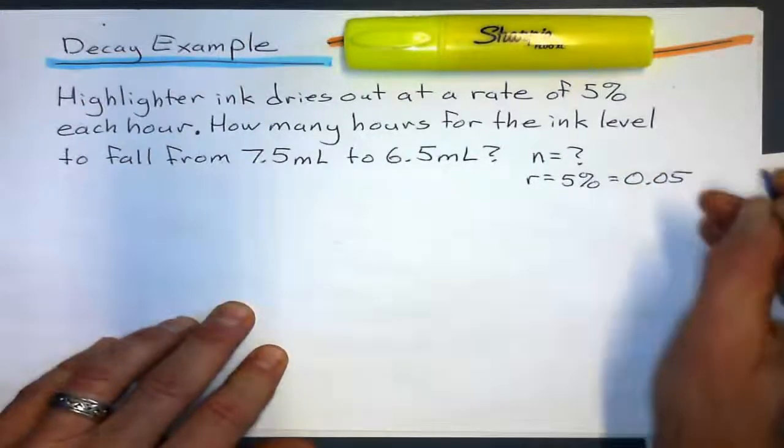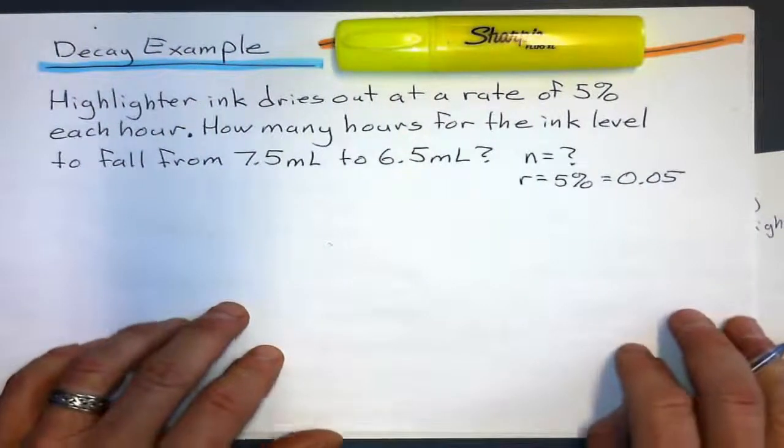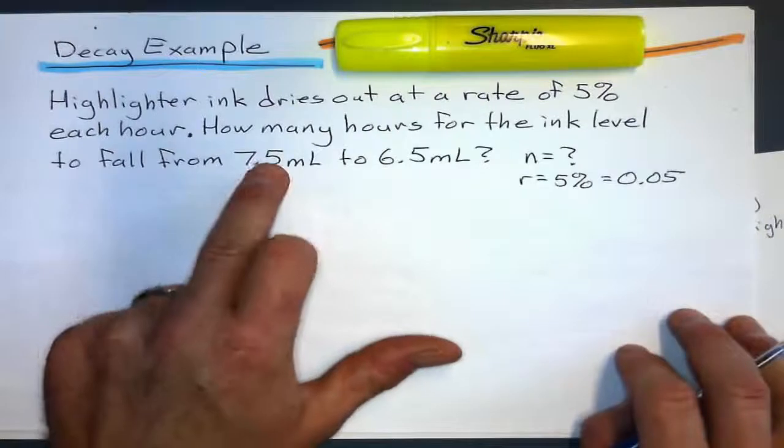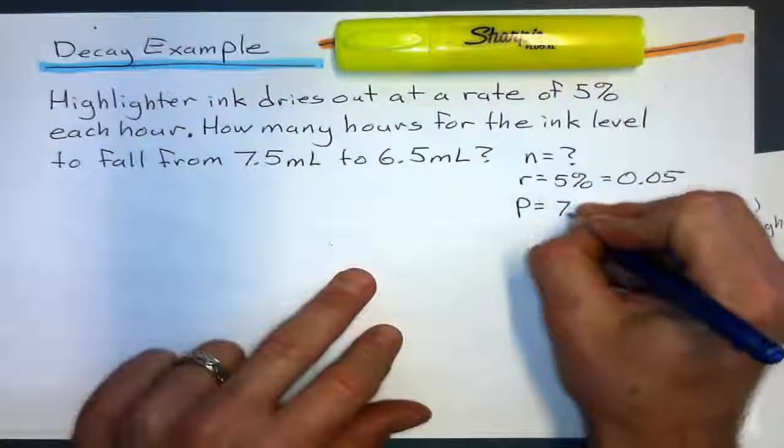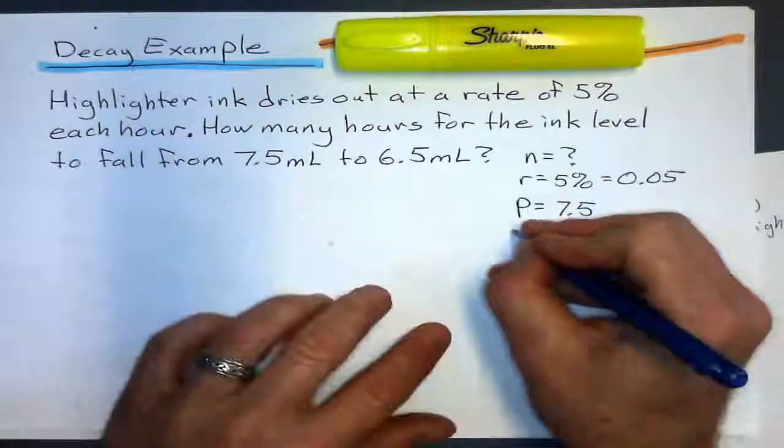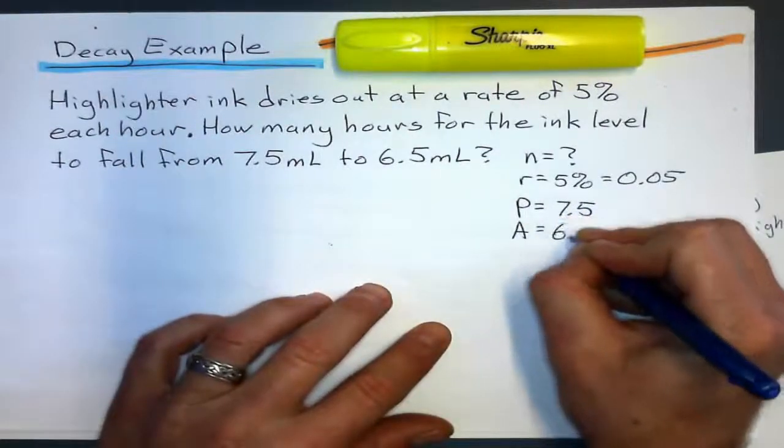How many hours means we're solving for N. And the rate is 5%. So, as a decimal, that's 0.05. What about these guys? From 7.5 is the first amount. From 7.5 milliliters. And the new amount is 6.5.